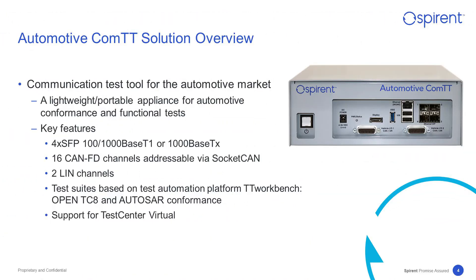Automotive COMTT's key features include four SFP modules on 100 and 1000 Base-T1 and TX interfaces, 16 CAN-FD channels for additional CAN control, and LIN interfaces for further LIN bus control.